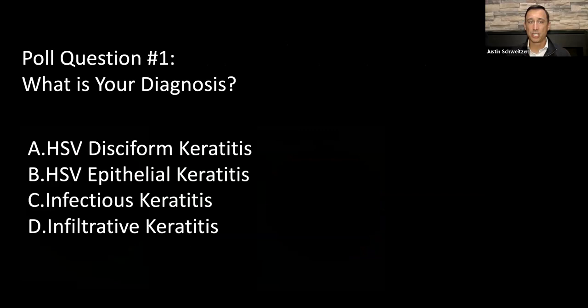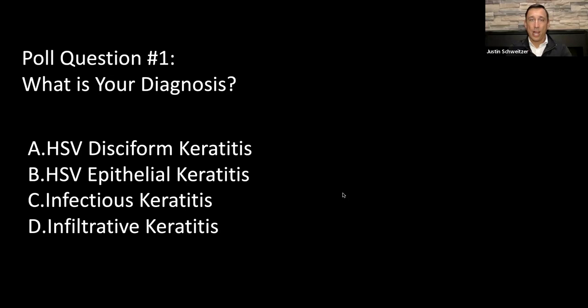The poll options are: A, herpetic HSV discoform keratitis; B, HSV epithelial keratitis; C, infectious keratitis; or D, infiltrative keratitis. By no means am I trying to be tricky — there is one right answer, and probably two of the same type of disease process going on. The way you treat these patients depending on the diagnosis is important, and the next step will be asking how you would treat this after we see the diagnosis results.